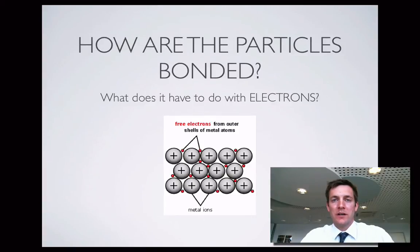So that explains why metal atoms when they put together will exist as ions. Why it's easy for them to lose electrons. Now if we look at how the particles in a metal are actually bonded together and start thinking about what it's got to do with those electrons.